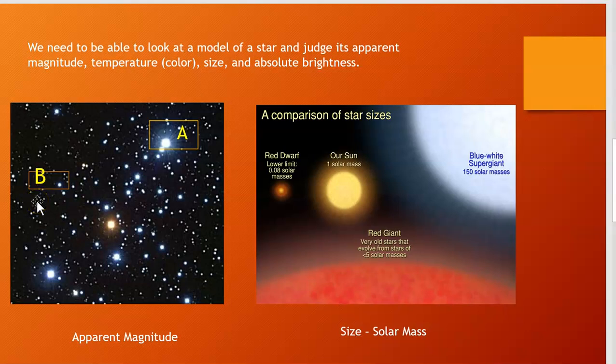Now you'll notice I said seemingly little guy. When we're talking about apparent magnitude, that is the brightness or the luminosity of a star from where we are sitting here on Earth. The star with the greater apparent magnitude is star A.